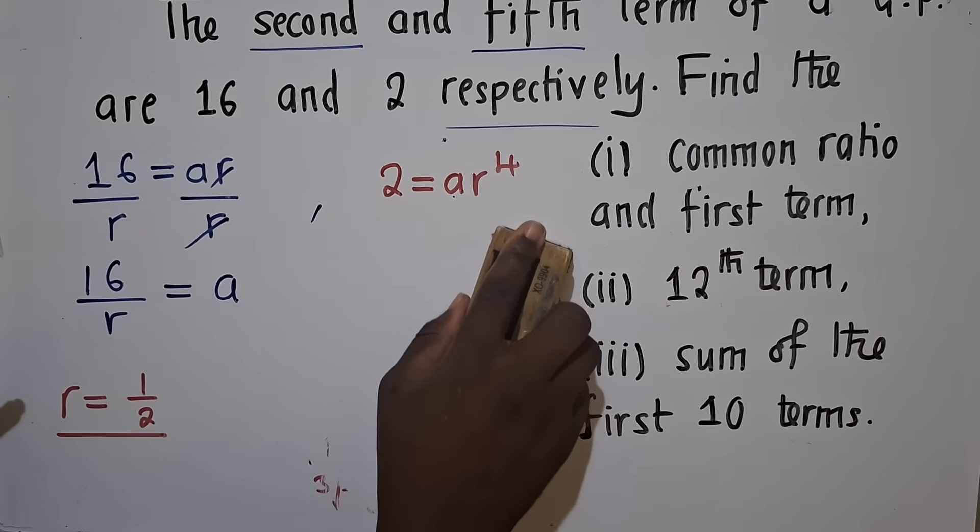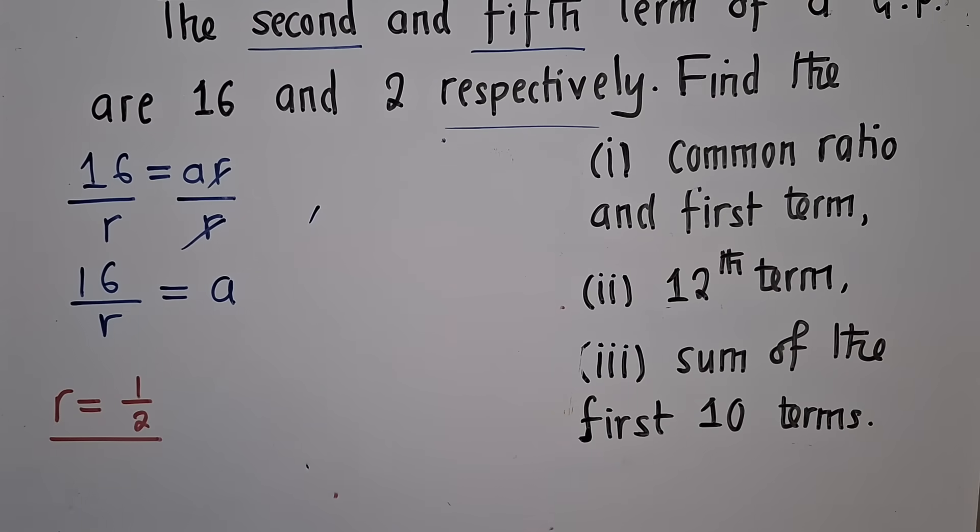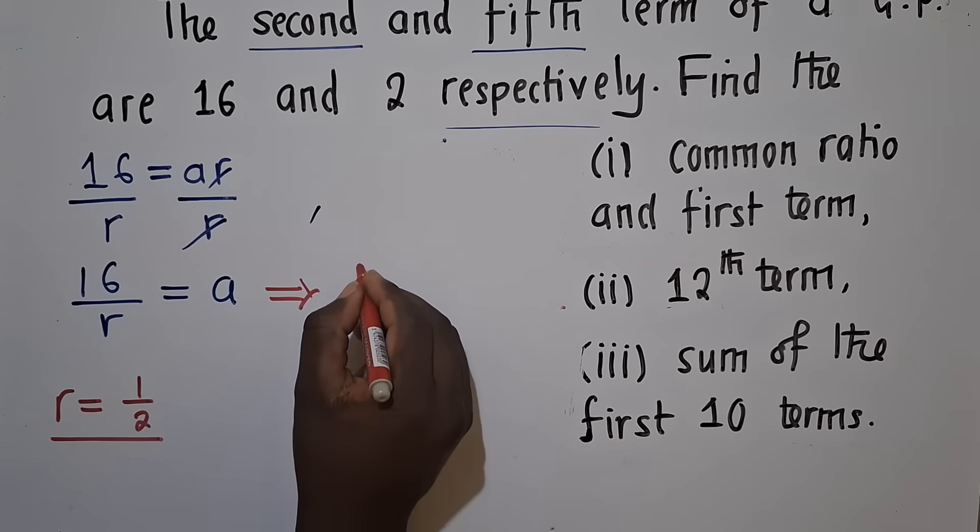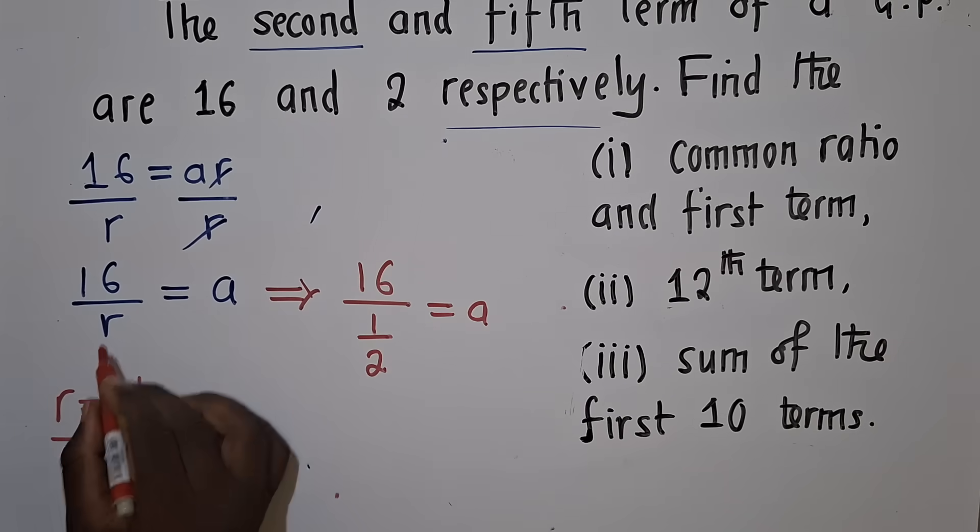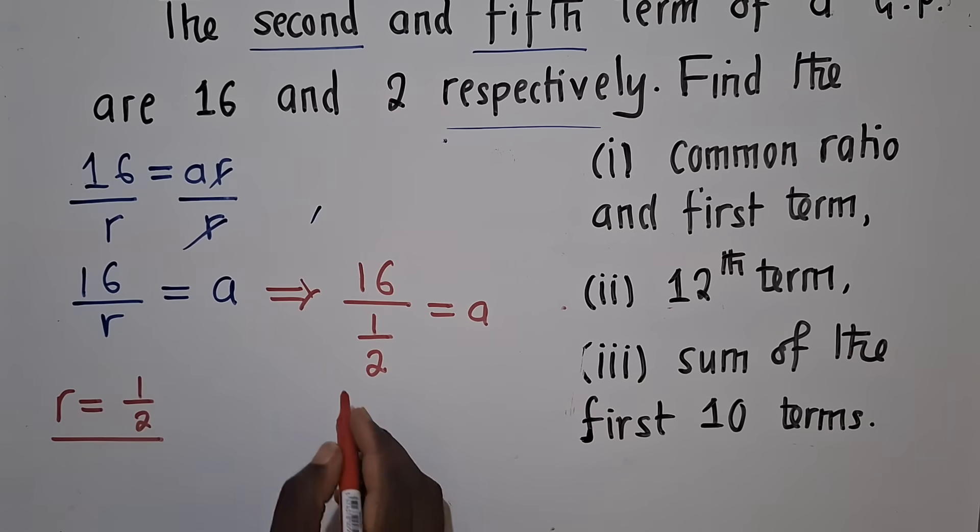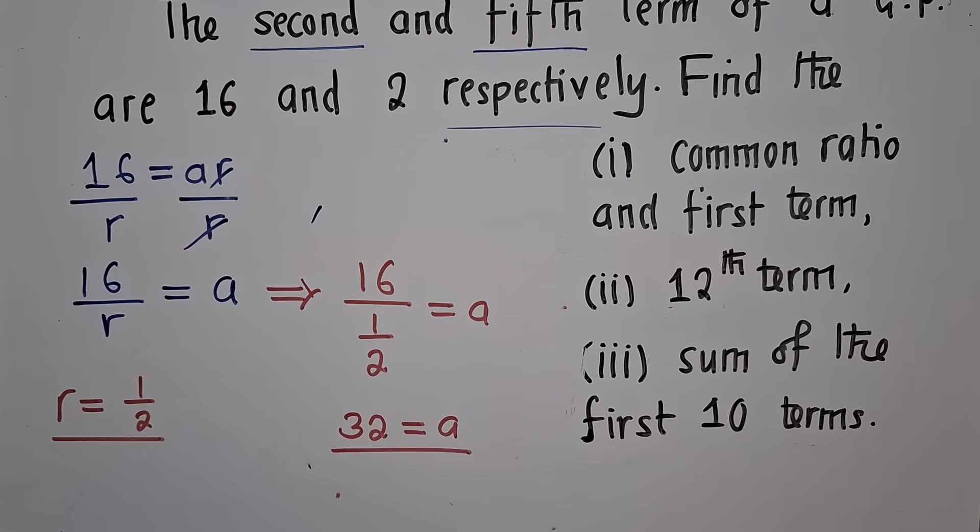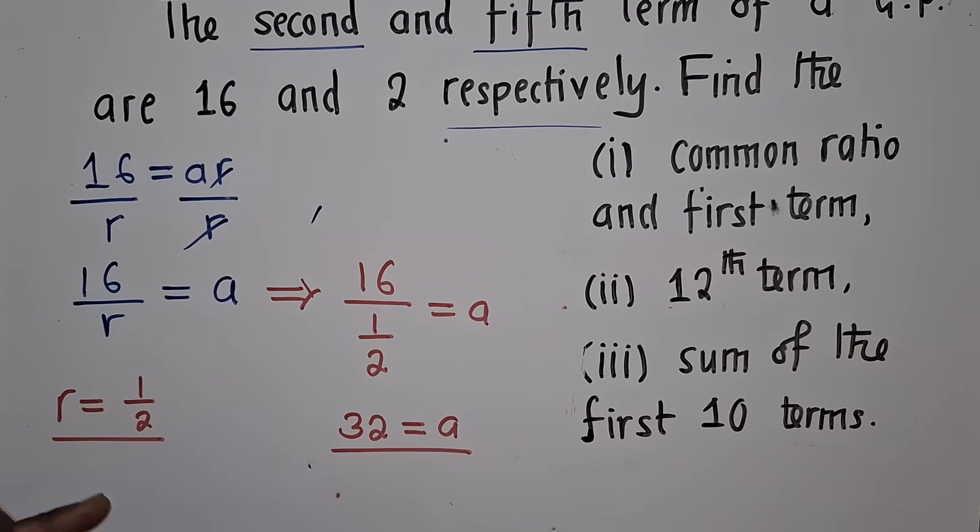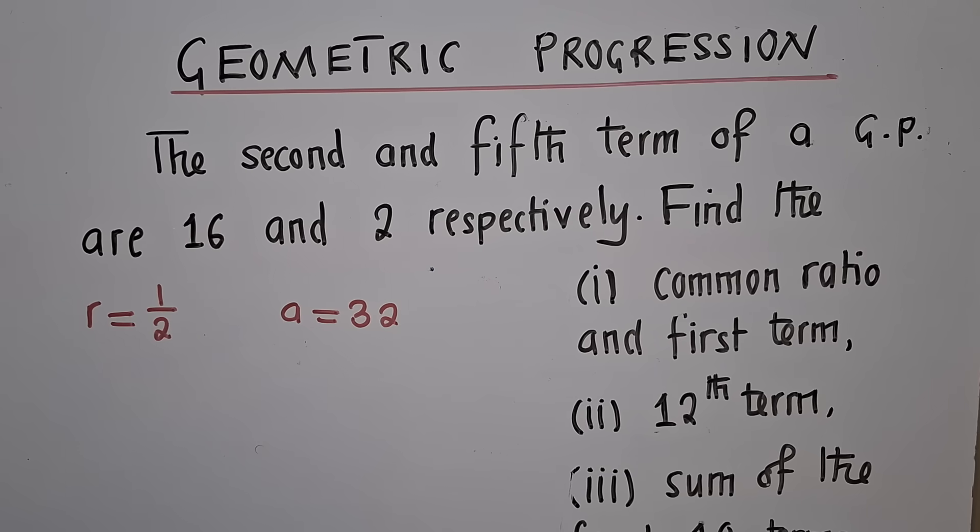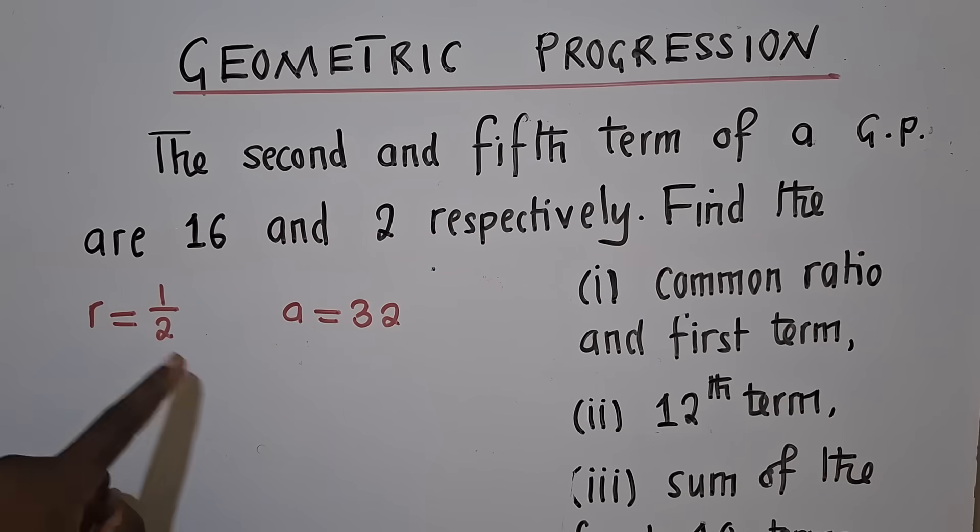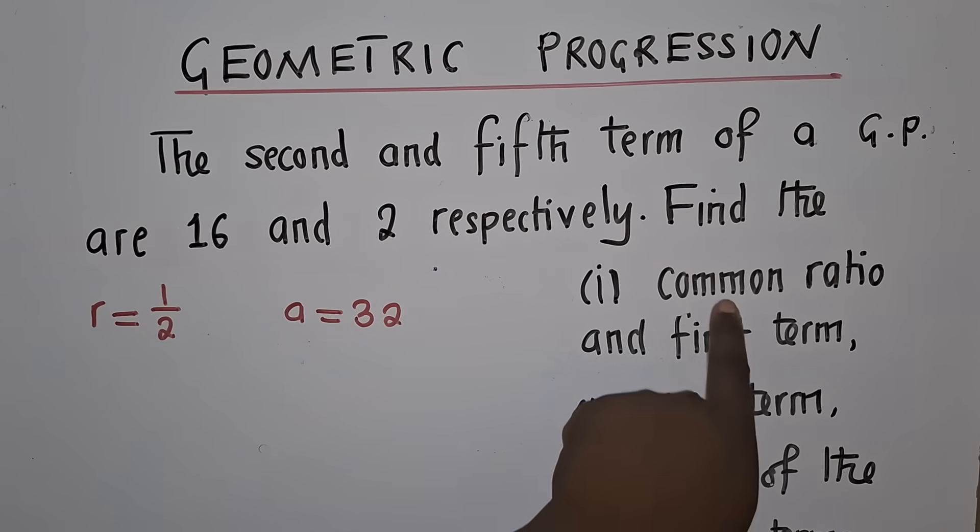So the value of R is 1 over 2. We can now find the value of A. For the value of A, you can come right over here. You say 16 over 1 over 2 is equal to A. You just substitute the R right over here, and when we work out this is giving us 32 is equal to A. Thank you so much for watching question 1. Let's go to question 2 and see what you're going to get on question 2. All right, we managed to find the value of R which is 1 over 2 and also the first term which is 32. That simply means question 1 has been answered: common ratio, first term.